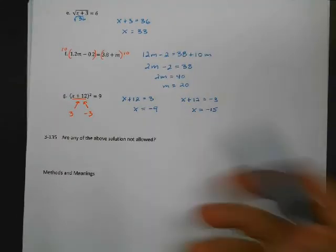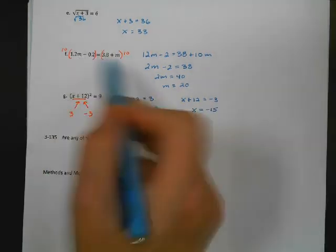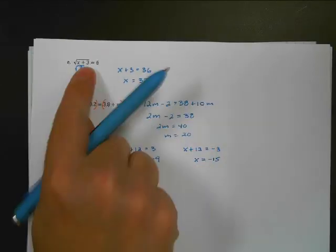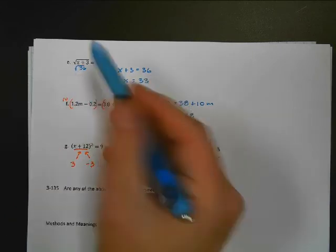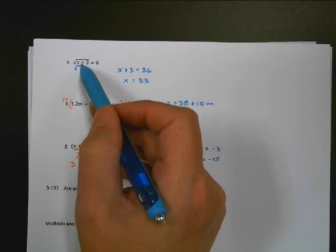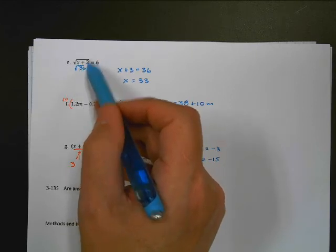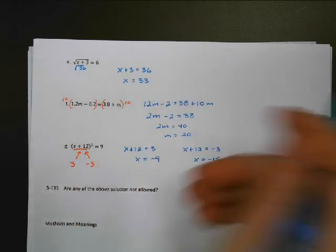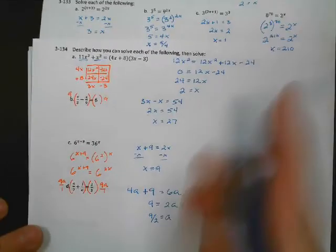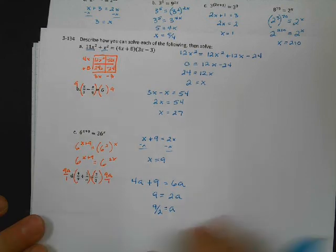Are there any solutions above that are not allowed? For the squared binomial problem, all solutions are fine — positives, negatives, fractions are all possible inputs. But for the square root problem, I could not plug in any number smaller than negative 3, because that would give a negative inside the radical, which is not allowed. 33 works fine. For the rational equation with a denominator of a, a cannot equal 0, because that would not work at all.